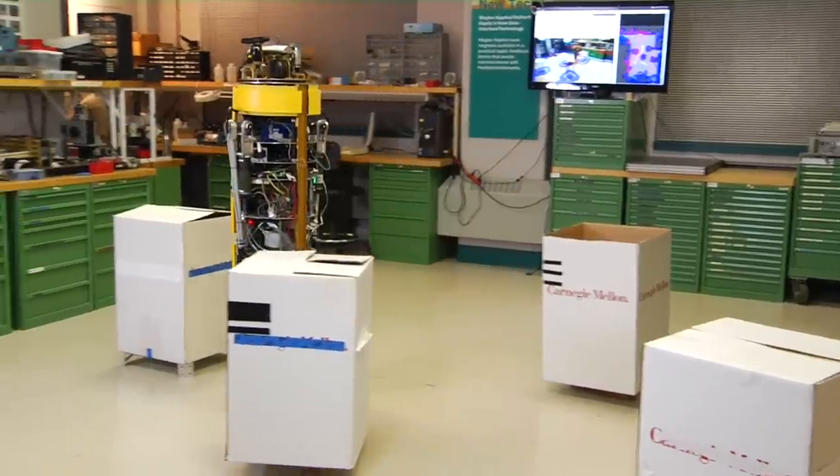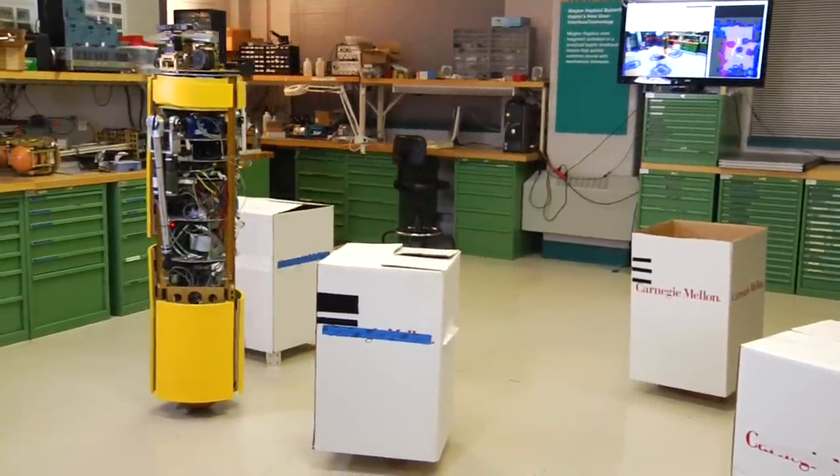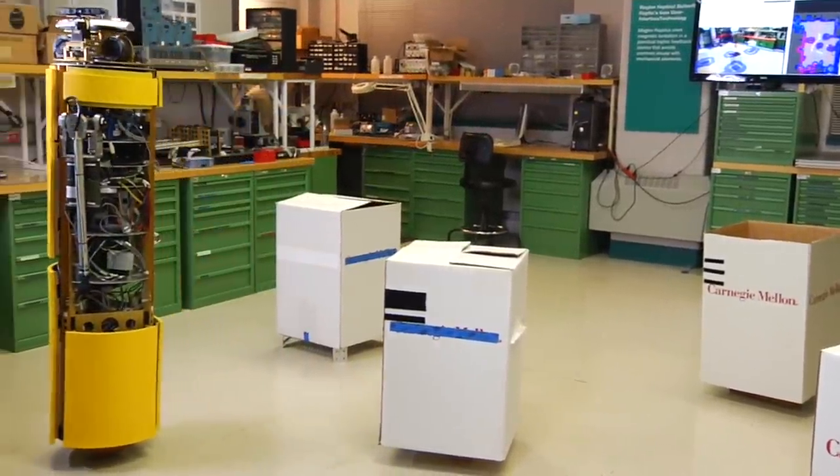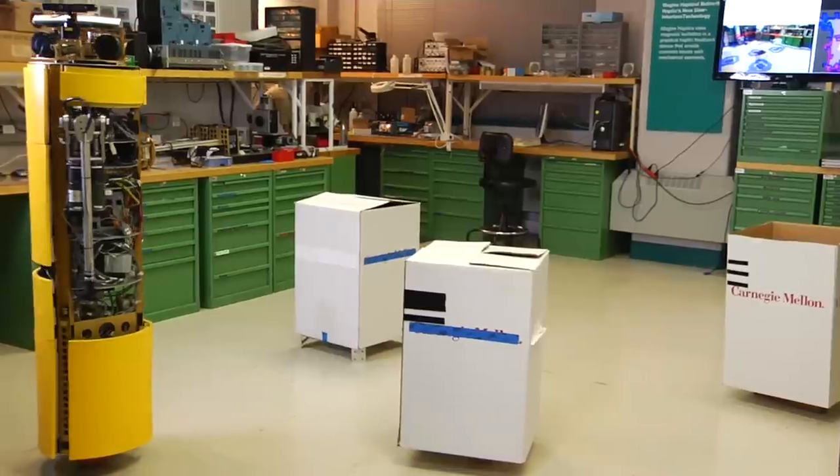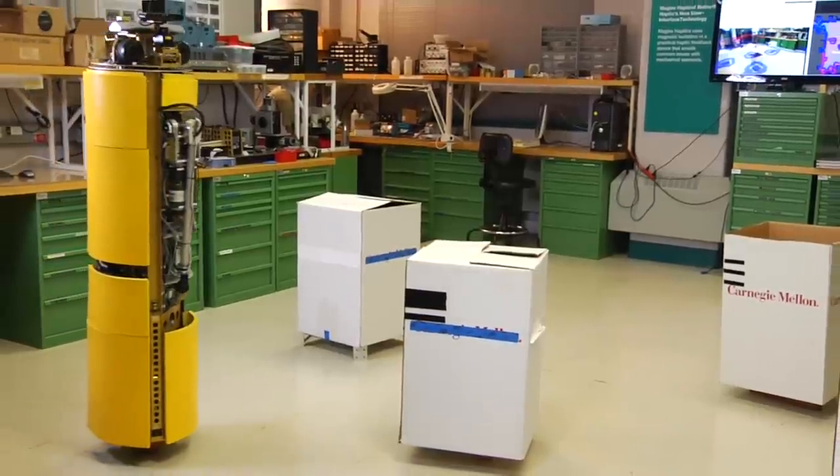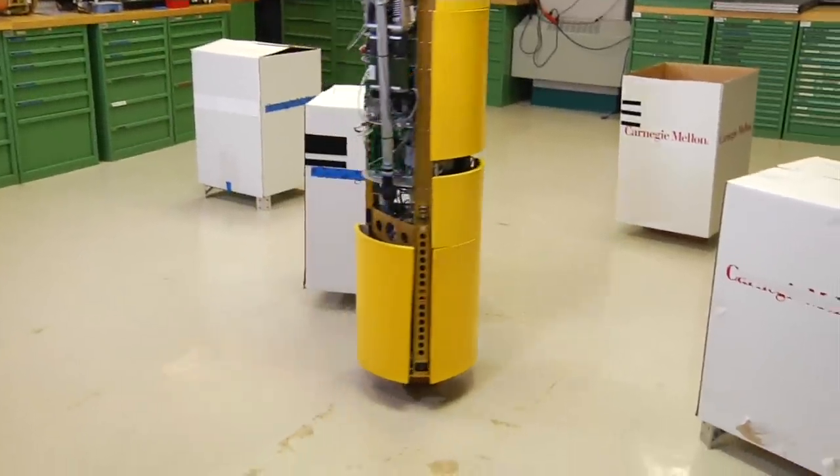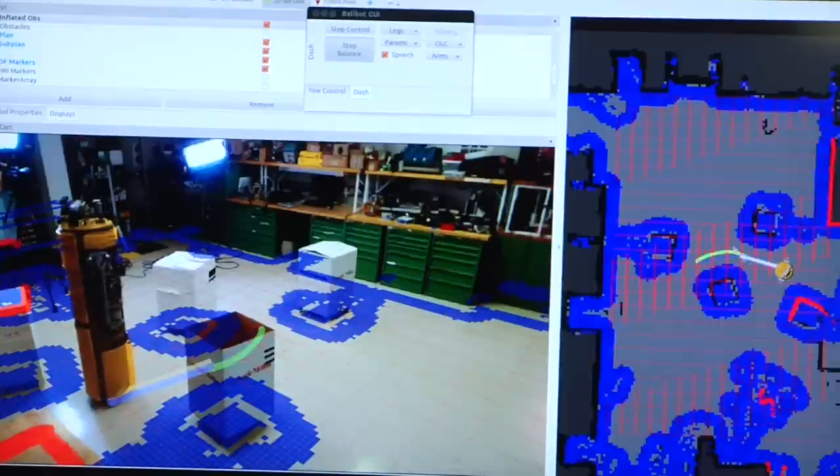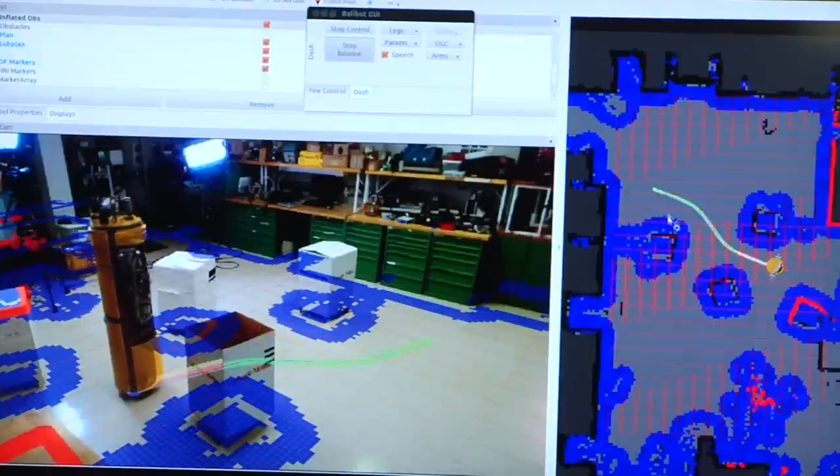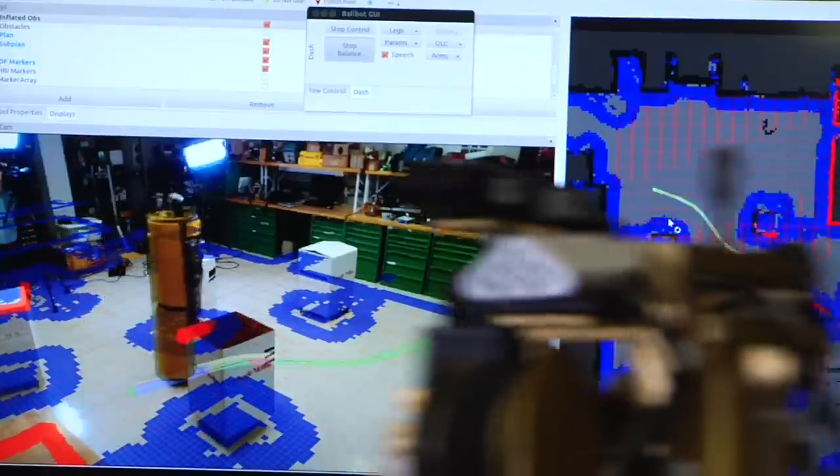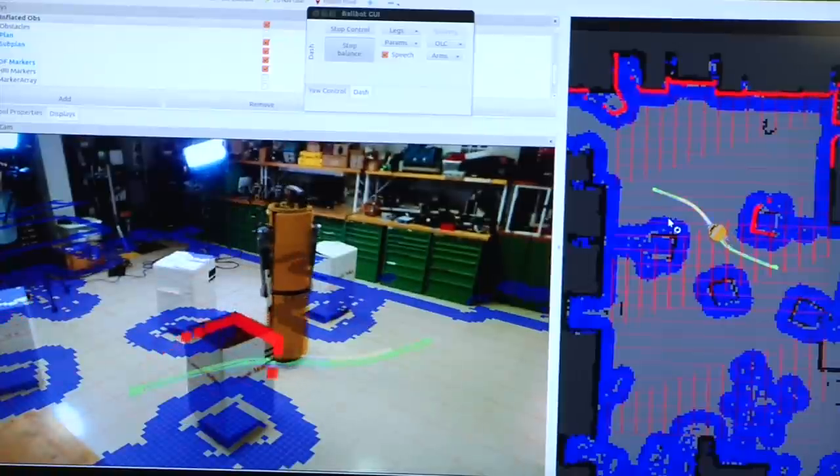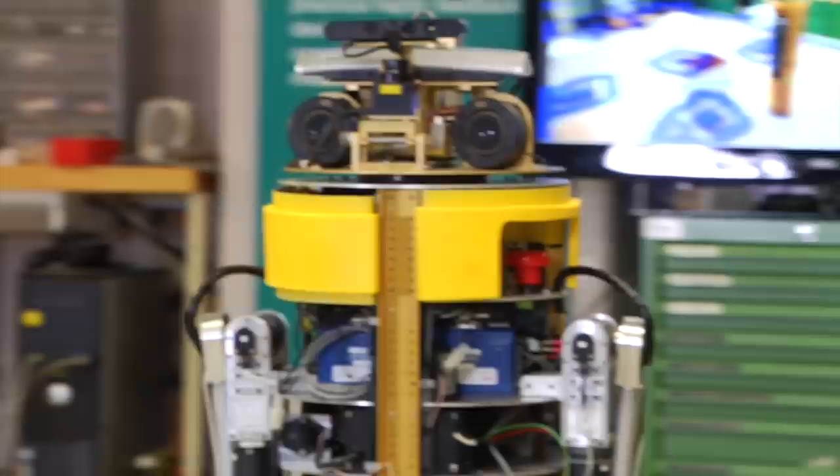We can take our work that we've already done in navigation, getting the robot through a building that it has created a map for, and apply that to helping someone physically navigate through that building. So one thing we might be able to do with the ballbot is take it by the hand, lead it through a building as it creates a map for itself, and tell it about what's in that building.